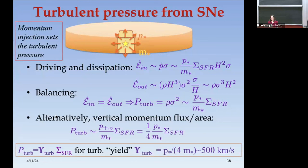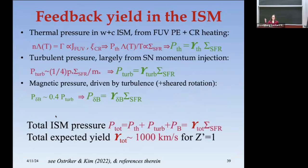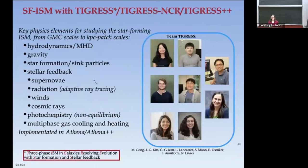All pressures are expected to be proportional to the star formation rate per unit area, with a total yield of order 1000 km/s when thermal, turbulent, and magnetic terms are combined. The simulation I showed — we call it TIGRESS — has gone through different generations, and these are the results we're now working on.